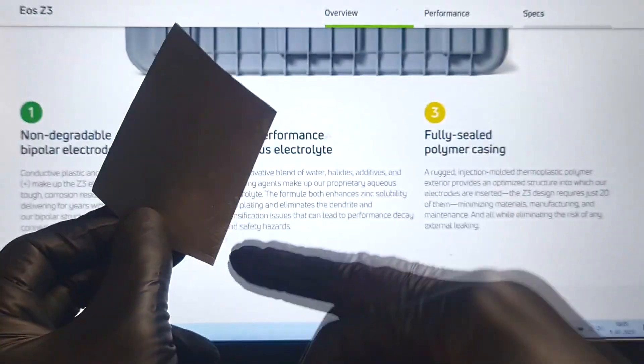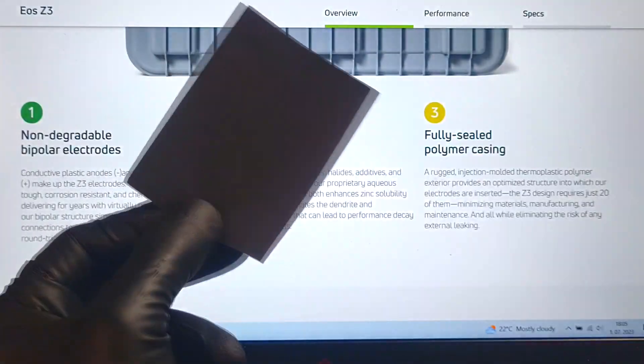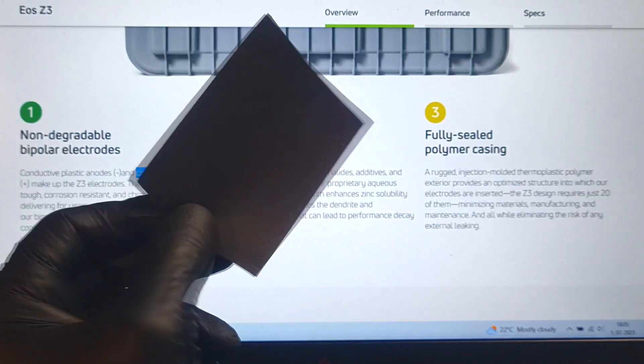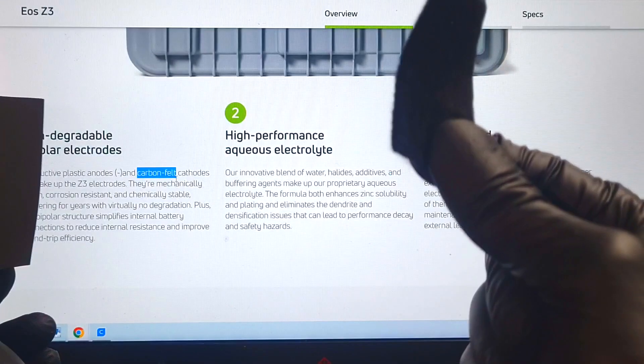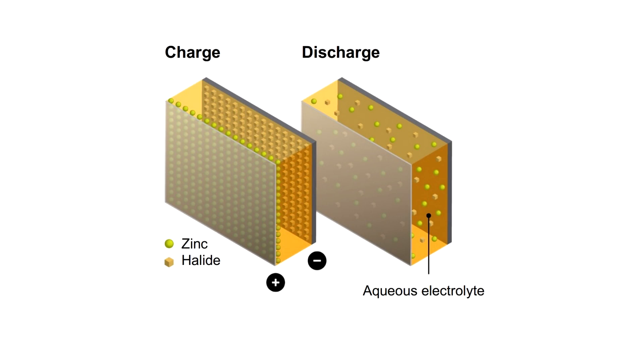And when the cell is charged on the surface of this conductive HDPE will start to form some zinc and on this carbon felt will form some bromine.